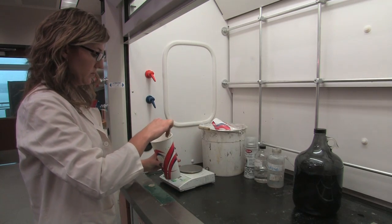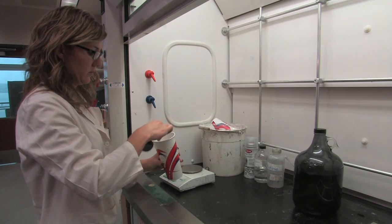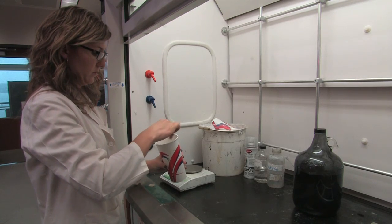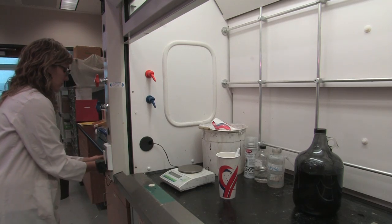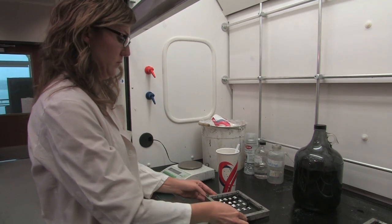Tare the scale again and then apply 1.4 grams of hardener with a disposable pipette. Stir the epoxy again with a spoon, make sure it is evenly distributed and then we're going to pour the top coat over the otoliths that we placed on the lines in our tray.